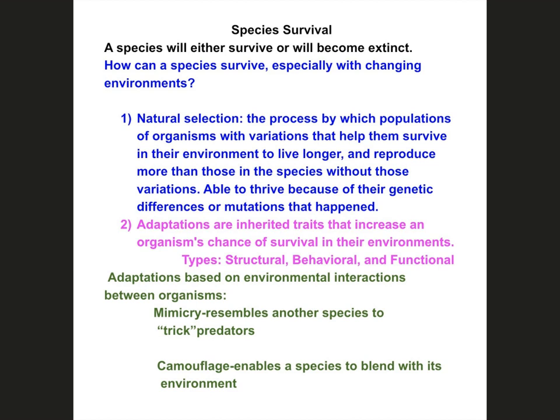Natural selection is the process by which populations of organisms with variations — and these variations are inherited differences or mutations in their DNA — can either help them survive their environment or make it worse for them. Nature actually selects which variations a species will use in order to adapt to its ever-changing environment.